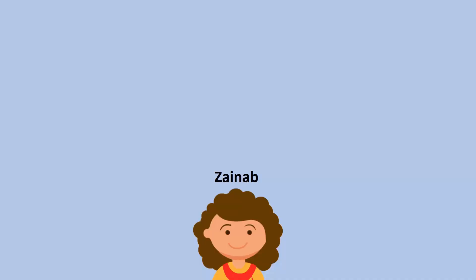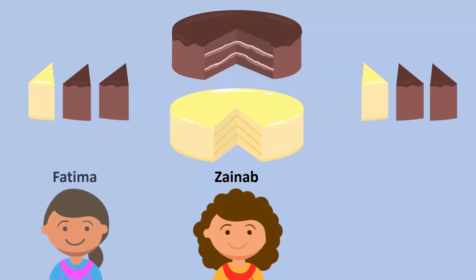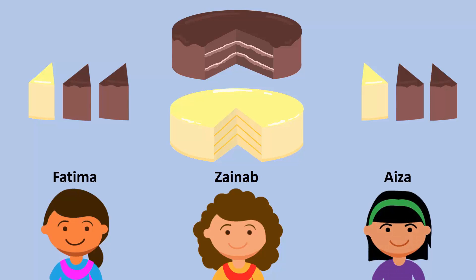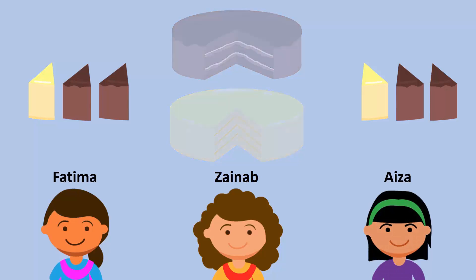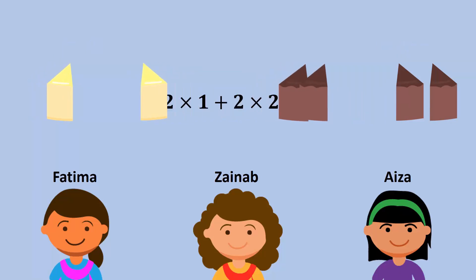One day, Zainab brings two cakes to school for lunch. She distributes six slices among her friends Fatma and Aiza. Zainab gives them each a slice of lemon cake and two slices of chocolate cake. However, Aiza does not like lemon cakes and asks Zainab to change her slices. Zainab then redistributes the slices as shown.